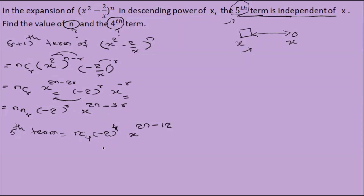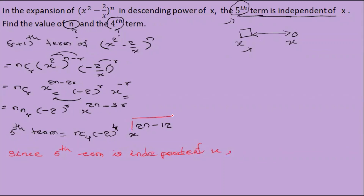If the fifth term is independent of x, then x to the power 2n minus 12 equals x to the power 0. So 2n minus 12 equals 0, giving 2n equals 12, therefore n equals 6.